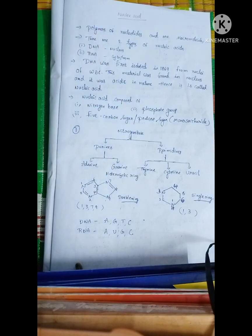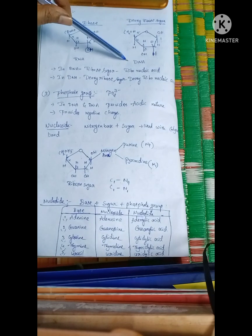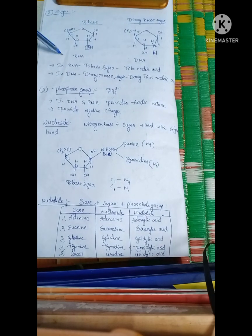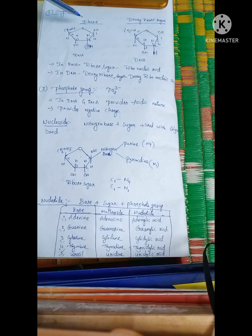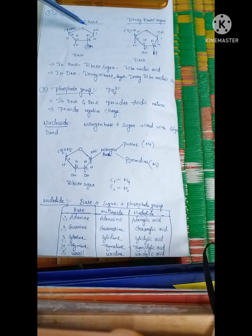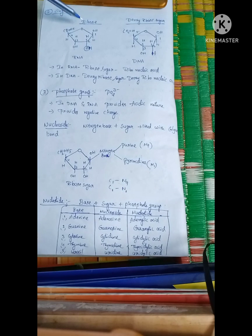There are two types of sugars in nucleic acids. RNA is called ribose sugar and DNA is called deoxyribose sugar.